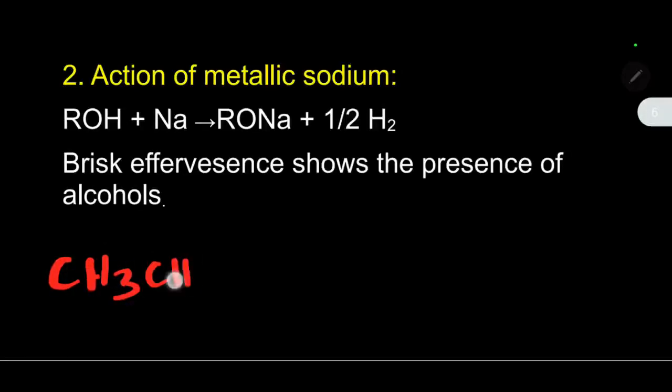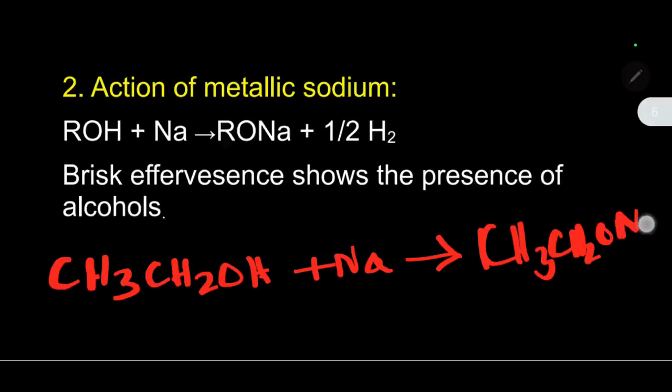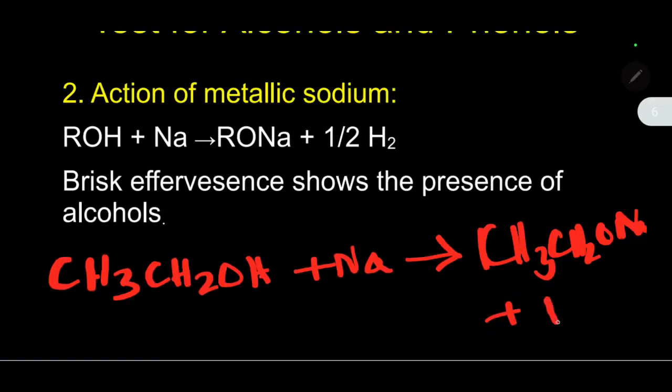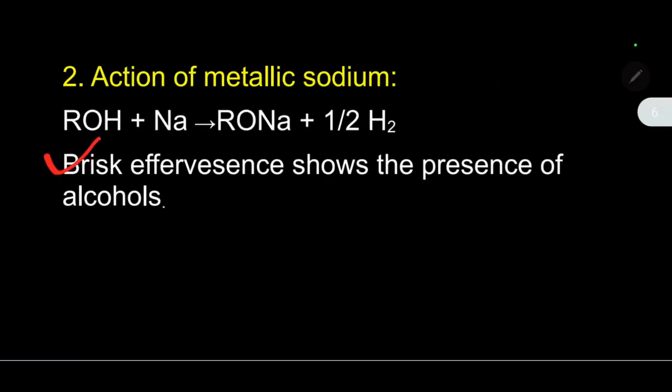Specifically, if you take ethyl alcohol, C2H5OH, and if you add metallic sodium - a small dry piece - immediately you get a brisk effervescence and forming sodium ethoxide, C2H5O-Na, and hydrogen gas will be liberated. The liberation of hydrogen gas we are seeing as brisk effervescence, which shows the presence of alcoholic group. This is the second test for alcohol.